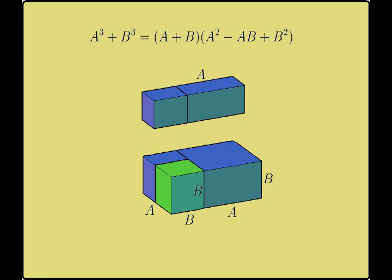This solid has dimensions a plus b by a minus b by a minus b. Now both solids have a length of a plus b. Let's join them together.